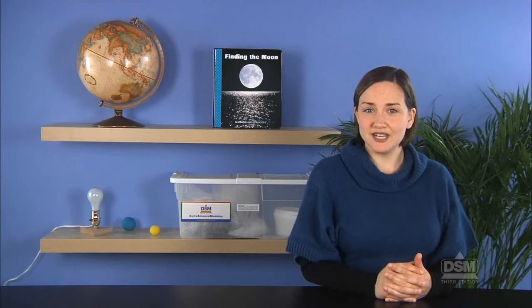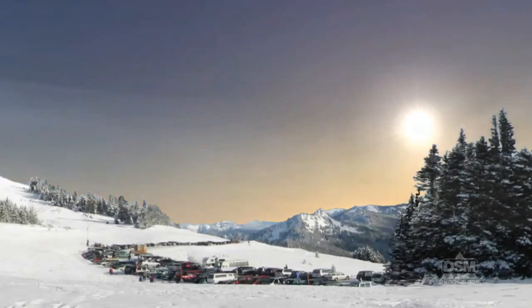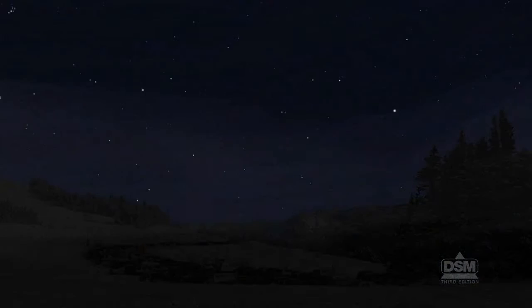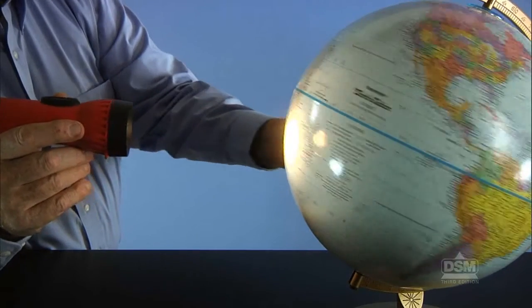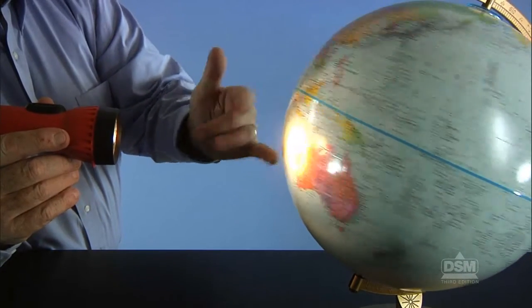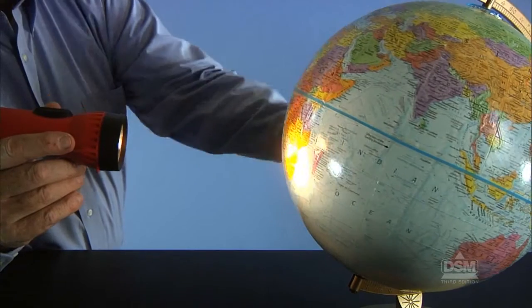Inform students that Earth is constantly turning and that sunrise and sunset are caused by the turning of Earth. During the day, one side of Earth has turned toward the sun. By nighttime, that side of Earth has turned away from the sun. Next, use the classroom globe to model what you have just told students. Model day and night by shining the flashlight on the globe while spinning it.